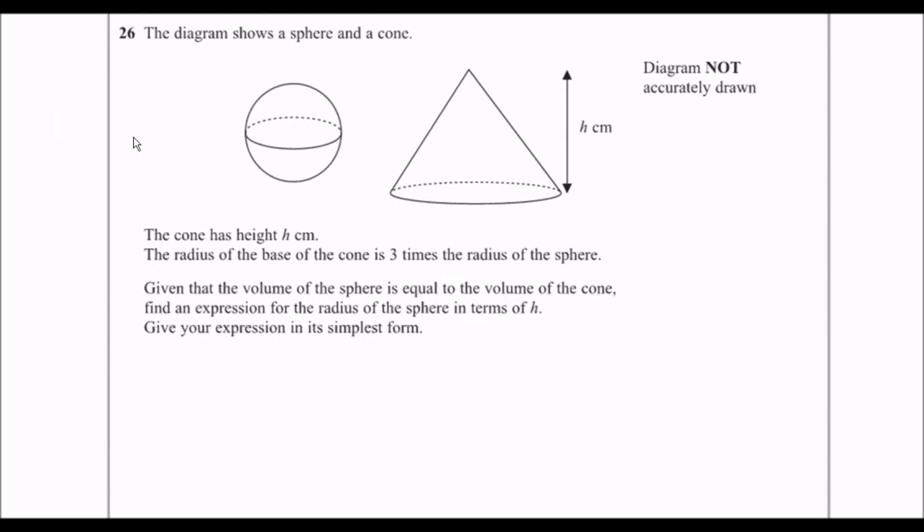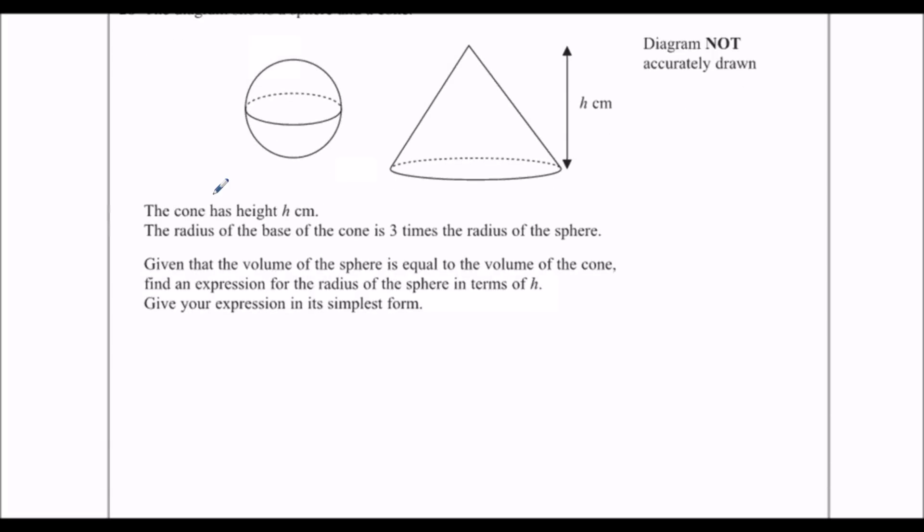We've got a sphere and a cone. The cone has a height of h. The radius of the cone is 3 times the radius of the sphere. So if this has a radius of r, this has a radius of 3r.